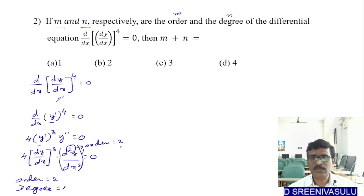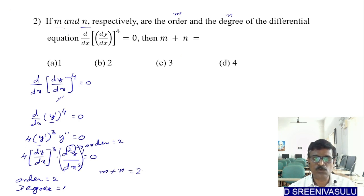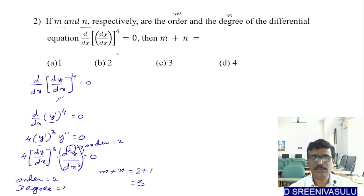Order m = 2 and degree n = 1. Therefore m + n = 2 + 1 = 3. The correct option is C.